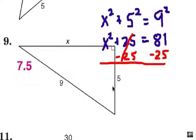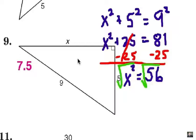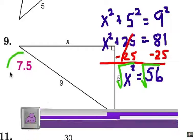So we subtract 25 from each side and now we have x squared equals 56. Take the square root now of each side. And because we're working with distances and measurements, we're going to take just the positive square root and round it to the nearest tenth at 7.5.